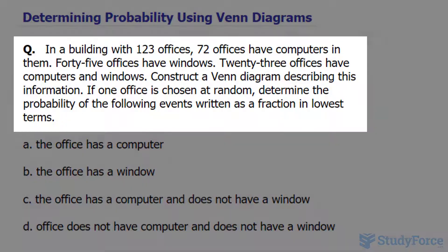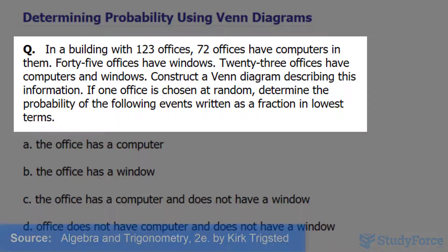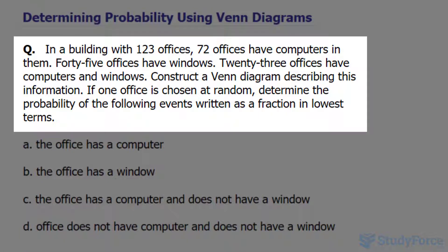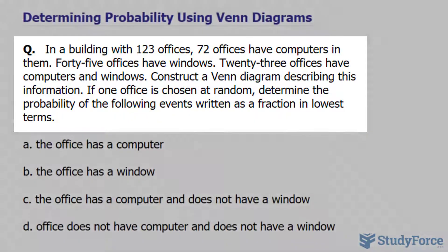The question reads: In a building with 123 offices, 72 offices have computers in them, 45 offices have windows, and 23 offices have computers and windows. Construct a Venn diagram describing this information. If one office is chosen at random, determine the probability of the following events written as a fraction in lowest terms.